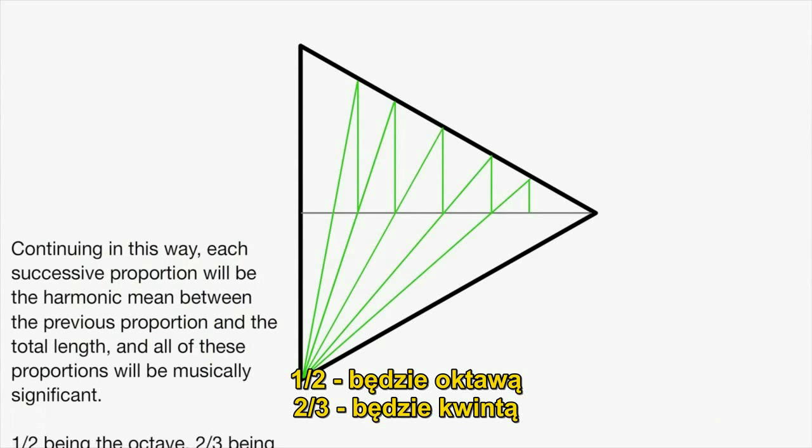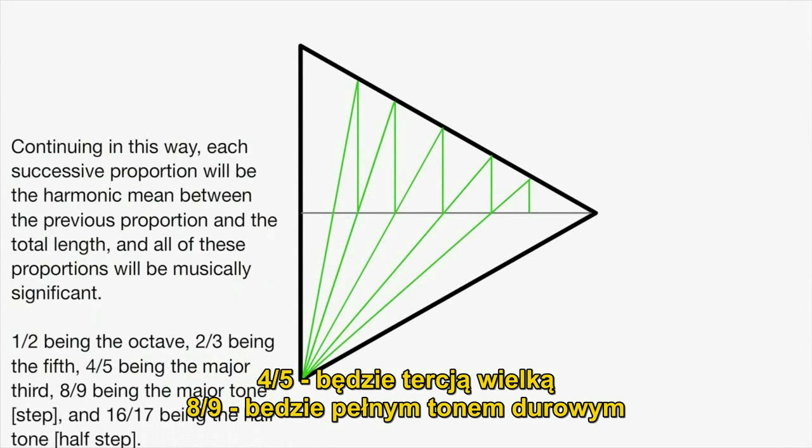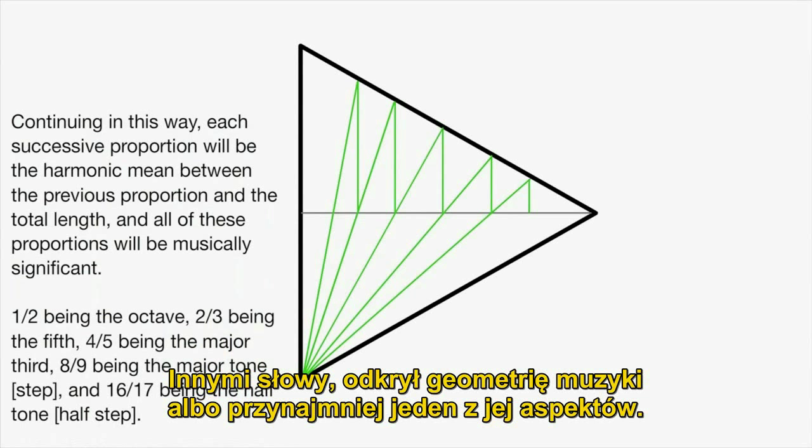1 over 2 being the octave, 2 over 3 being the 5th, 4 over 5 being the major 3rd, 8 over 9 being the major tone or step, and 16 over 17 being the half tone or step. In other words, he discovered the geometries of music, or at least one aspect of them.